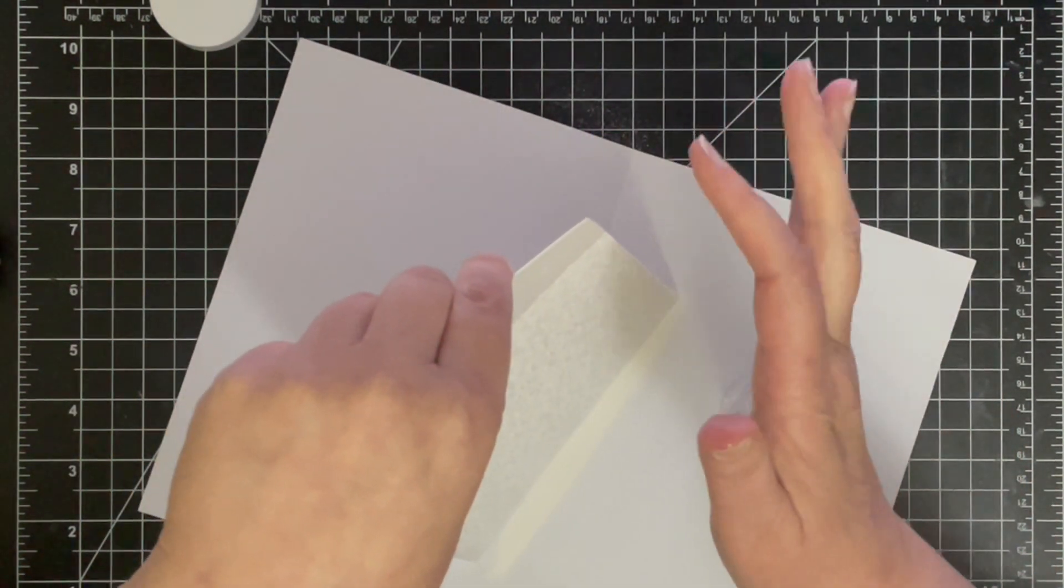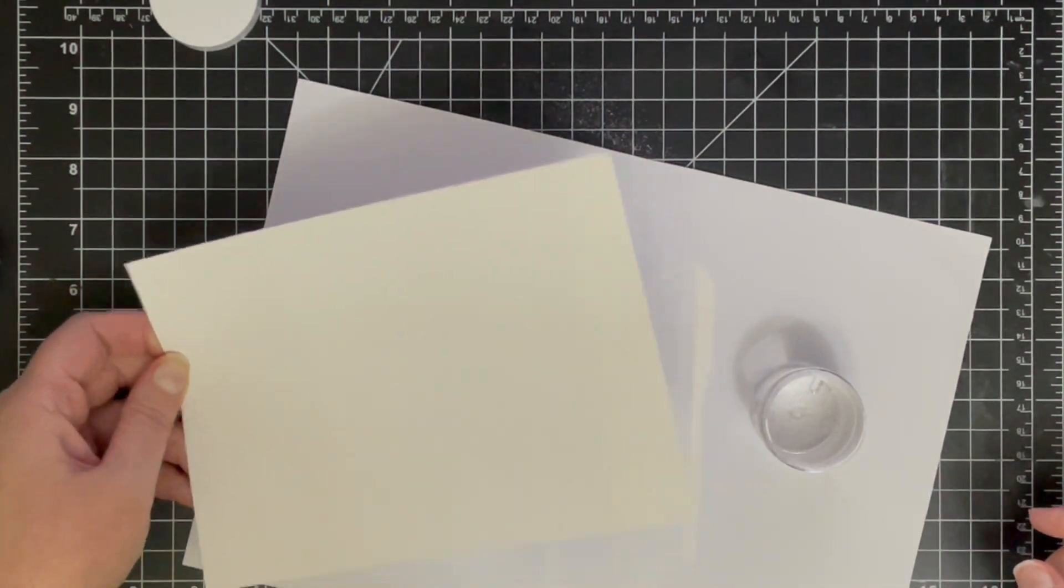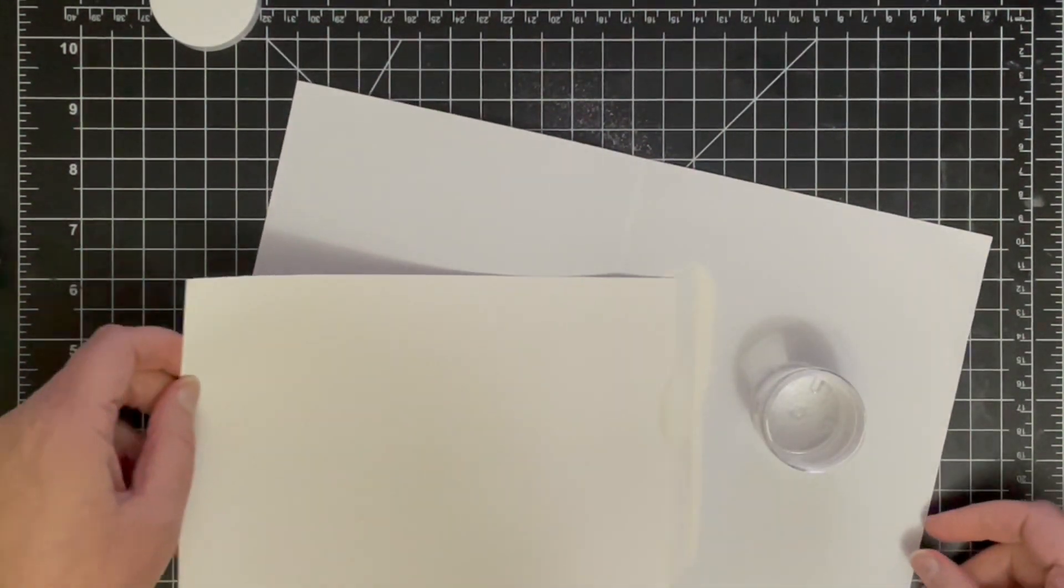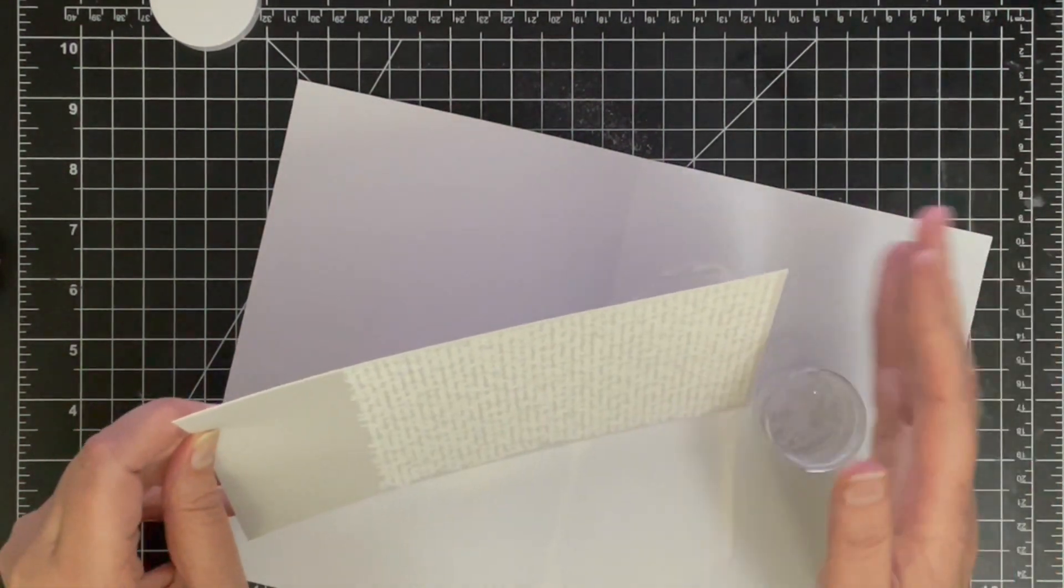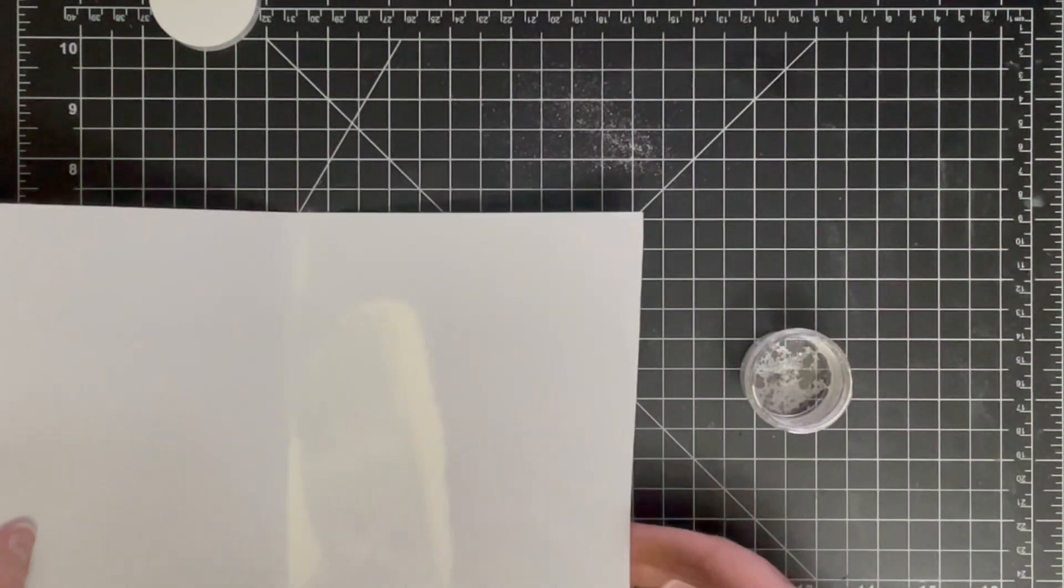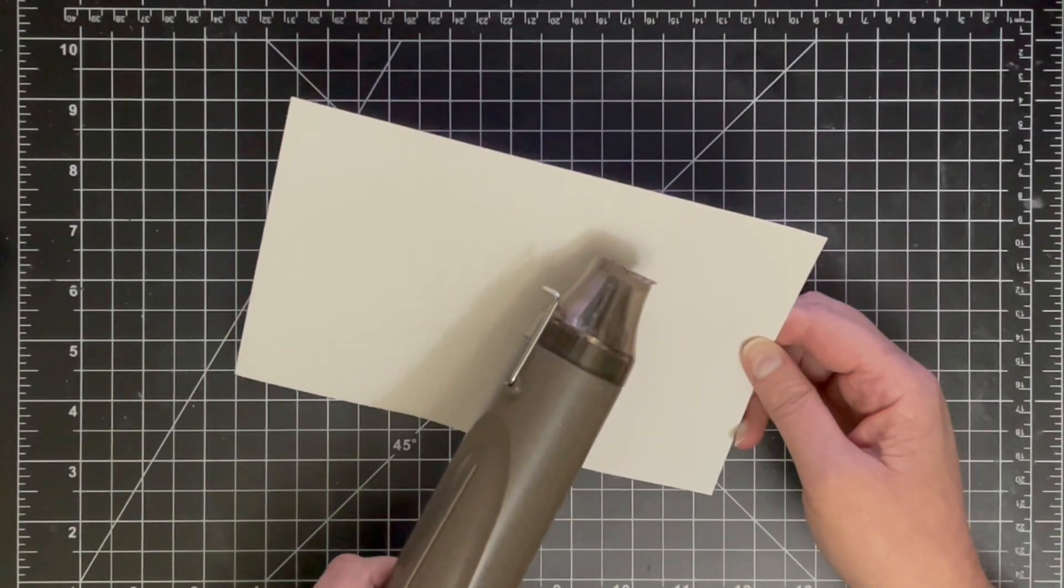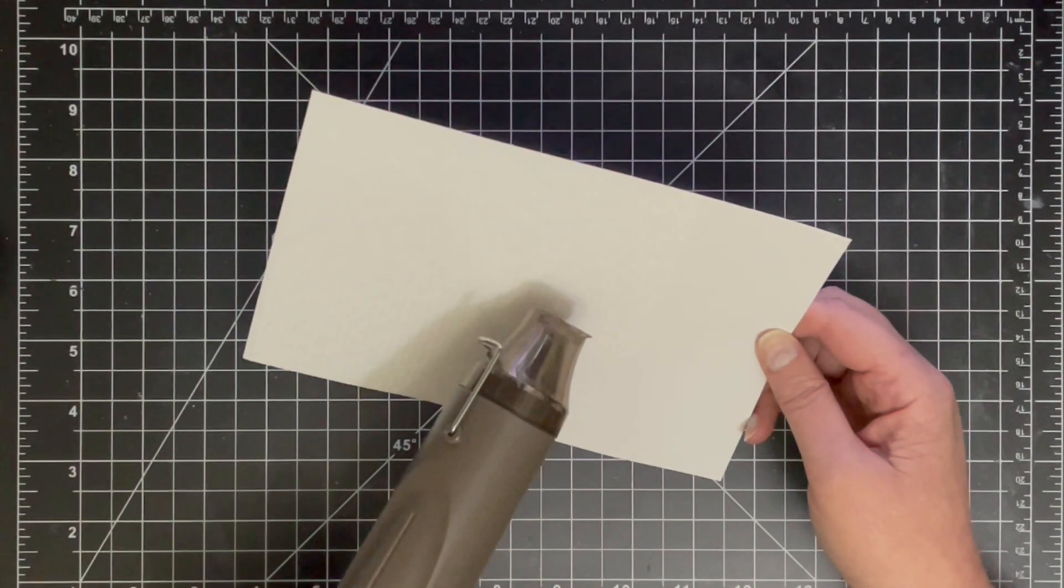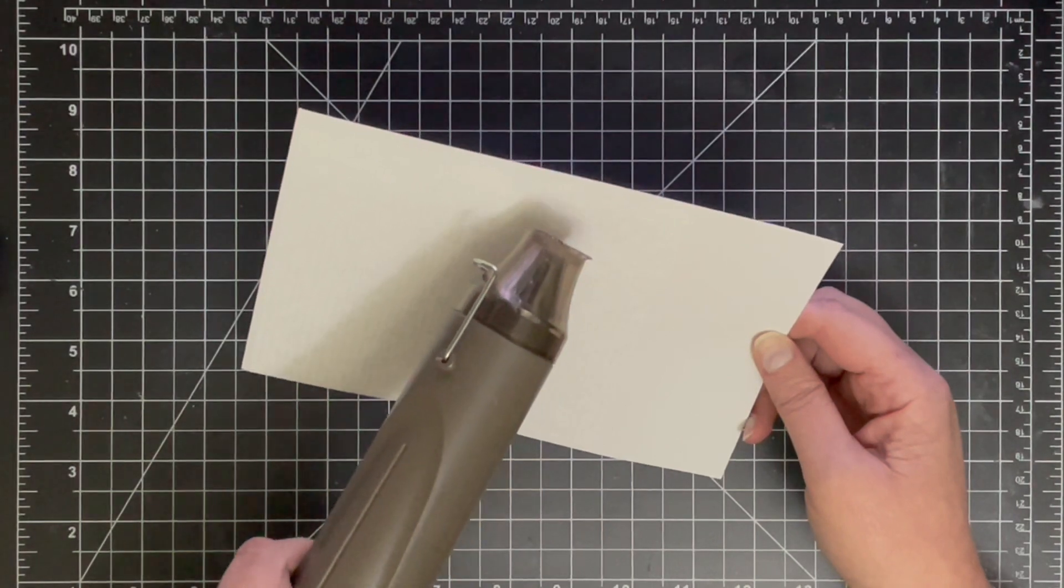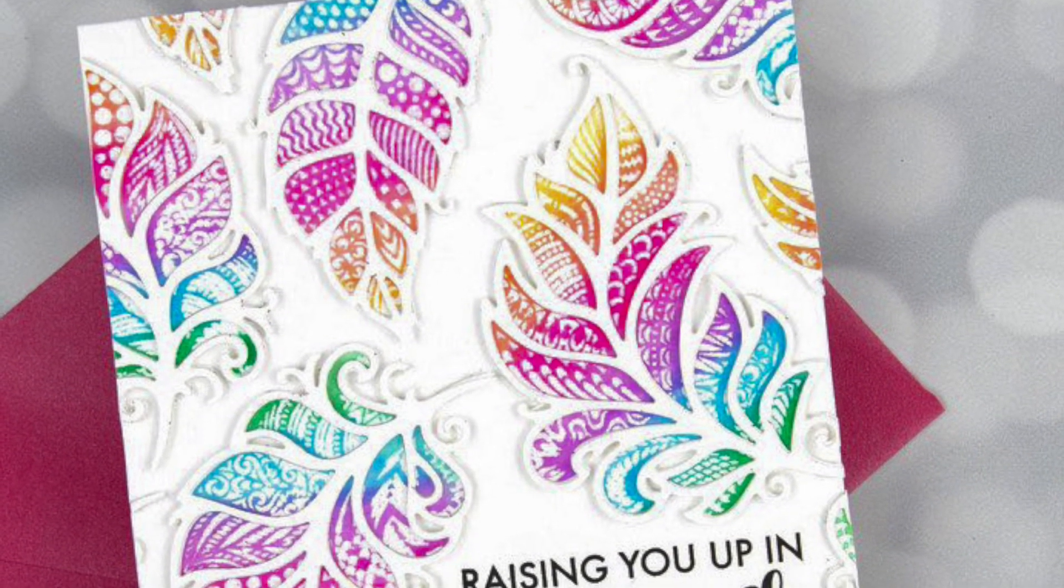So I'm using some Hero Arts white embossing powder and just sprinkling that all over the text image and making sure I've got good coverage here. I'm just going back in with a little bit of extra embossing powder to make sure I've got every little bit covered, and just making sure I collect all of the leftovers and zapping it with my heat tool here.